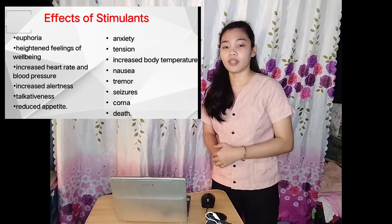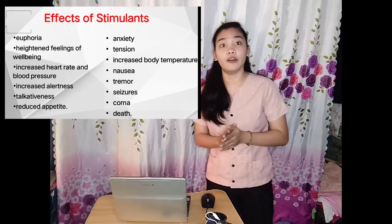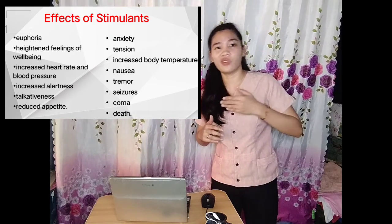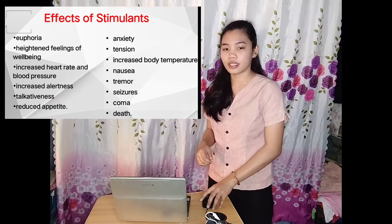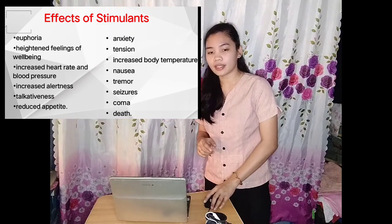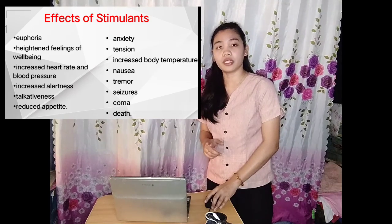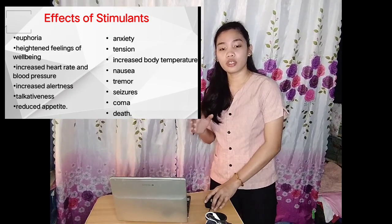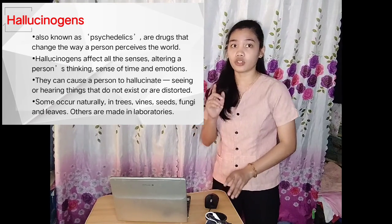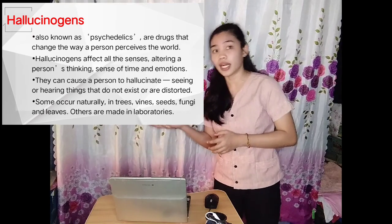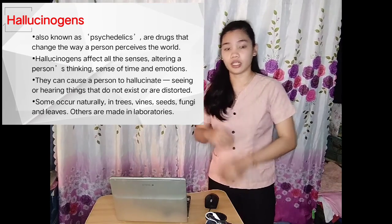Effects of stimulants include euphoria, heightened feelings of well-being, increased heart rate and blood pressure — since they are called uppers, your heartbeat and blood pressure increase — increased alertness, talkativeness, reduced appetite, anxiety, tension, increased body temperature, tremor, seizures, coma, and in the worst case, death. When a person overdoses, it leads not just to addiction but also to death.